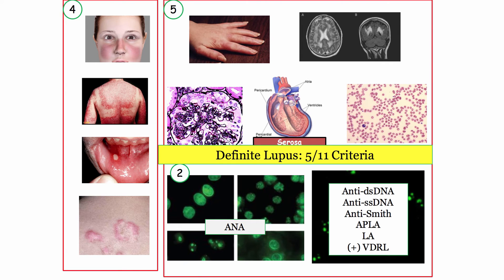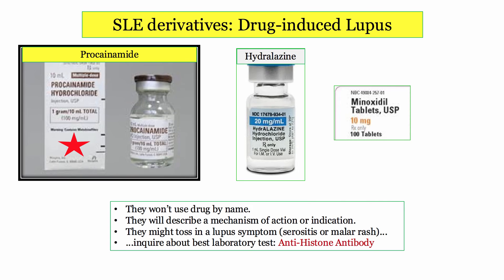A patient is considered to have lupus if 5 of the 11 criteria are positive, and the diagnosis will be obvious. The first derivative is drug-induced lupus. The trap is that they won't mention the offending agent by name — for instance, with procainamide, they will say a patient has a cardiac arrhythmia and has started an agent that widens the QRS complex, who then develops an erythematous facial rash. The question would ask which test, such as antihistone antibody, would be most useful in making the diagnosis.